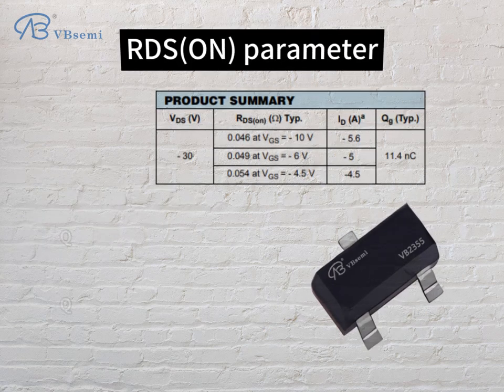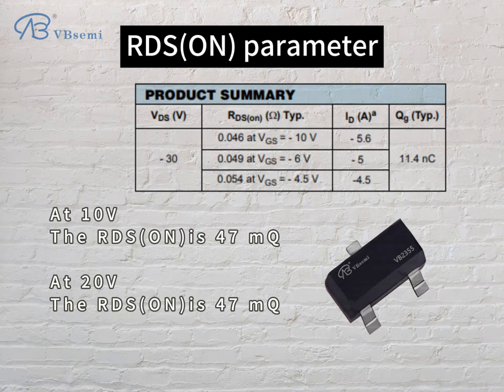RDS(on) parameter: at 10V, the RDS(on) is 47mΩ; at 20V, the RDS(on) is also 47mΩ.